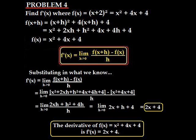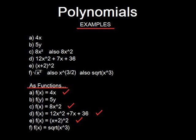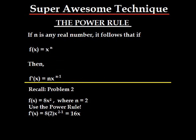Okay, so you learned the definition of a derivative. So now we're going to teach you a super awesome technique that you're going to love, and it's called the power rule. If n is any real number, it follows that if f(x) equals x to the power of n, then f prime of x, the derivative and the slope, equals n times x to the power of n-1. So recall from problem 2, f(x) was equal to 8x², where n was equal to 2, as you can see. If you use the power rule, the 2 comes down, multiplies into the 8, 2 from 1 is 1, 16x to the power of 1 is 16x.